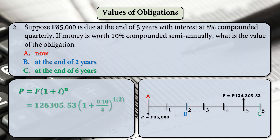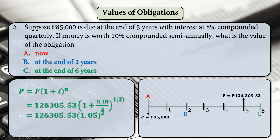For Letter C (value at end of year 6): using the same formula with T equal to 1 year — positive exponent because it is after the focal date — the quantity is 1.05 squared. The answer for Letter C is 139,251 pesos and 85 centavos. Note: if the date of comparison is before our focal date, the exponent is negative; if after, the exponent is positive.